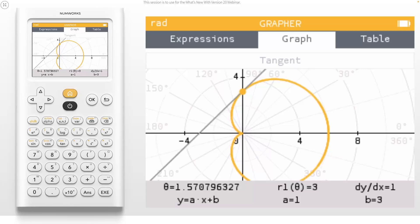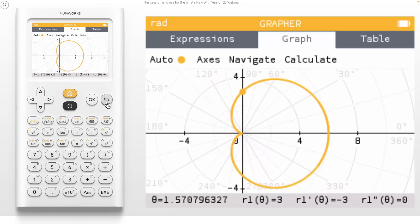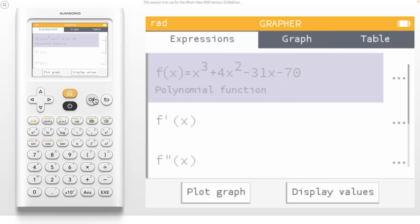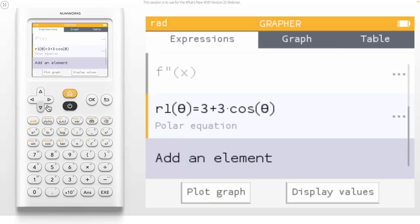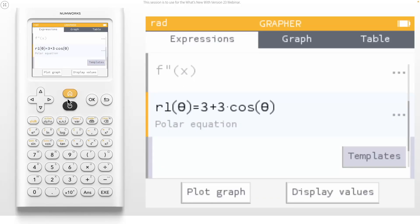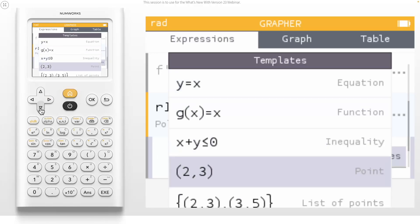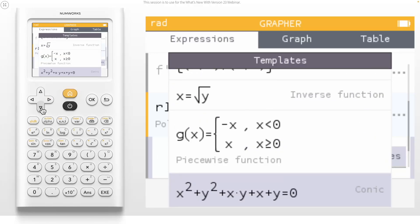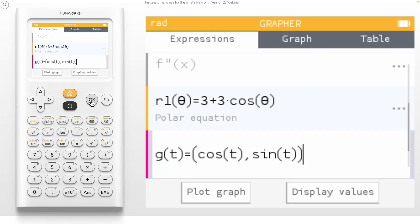We will not walk through all of these for parametric, but I do want to highlight inputting parametric functions. Let's navigate back to the expression tab, add a new element, and use a template. Navigate down to the template menu. We've updated our parametric function inputs to use point notation for a more consistent experience.